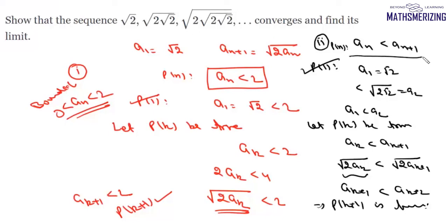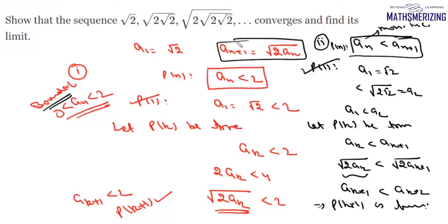By mathematical induction, aₙ < aₙ₊₁, so the sequence is monotonically increasing. Since the sequence is bounded and monotonic, by the Monotone Convergence Theorem it is convergent. Using the recursive relation and taking the limit as n → ∞, if the sequence converges to limit l, then l = √(2l), giving l² = 2l, so l = 2. The sequence converges to 2.